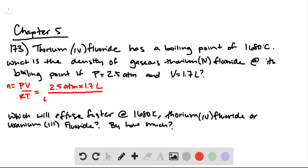We can plug in the ideal gas law constant and the temperature, which is 1680 degrees Celsius or 1953 kelvin. This gives us 0.0265 moles of our compound.